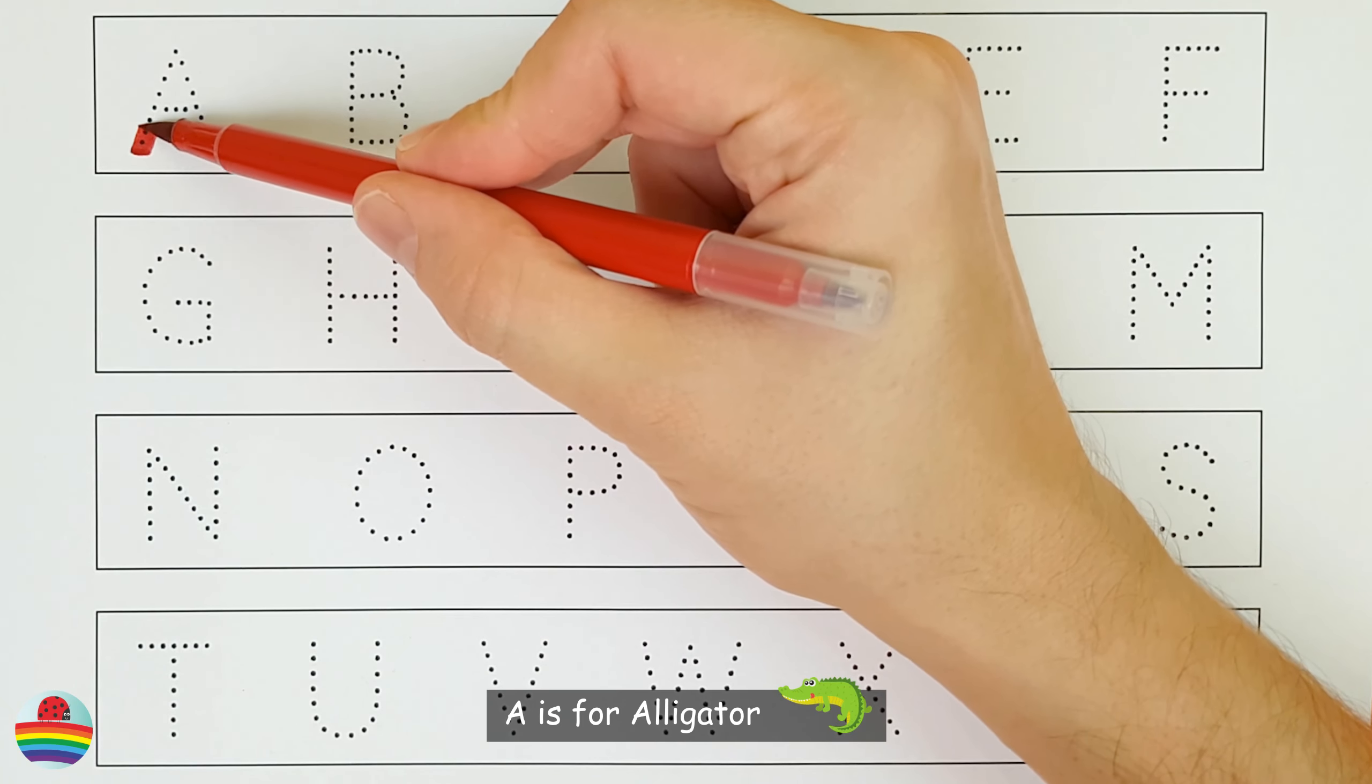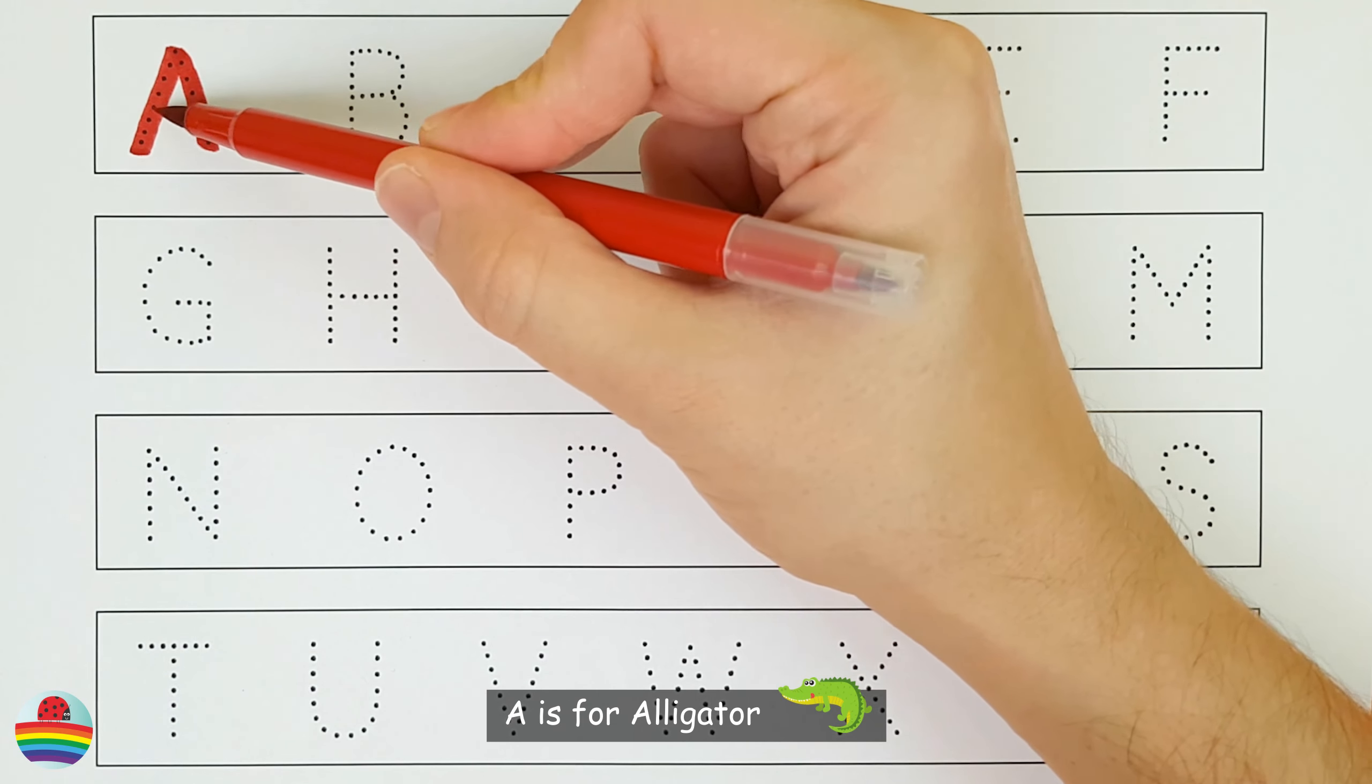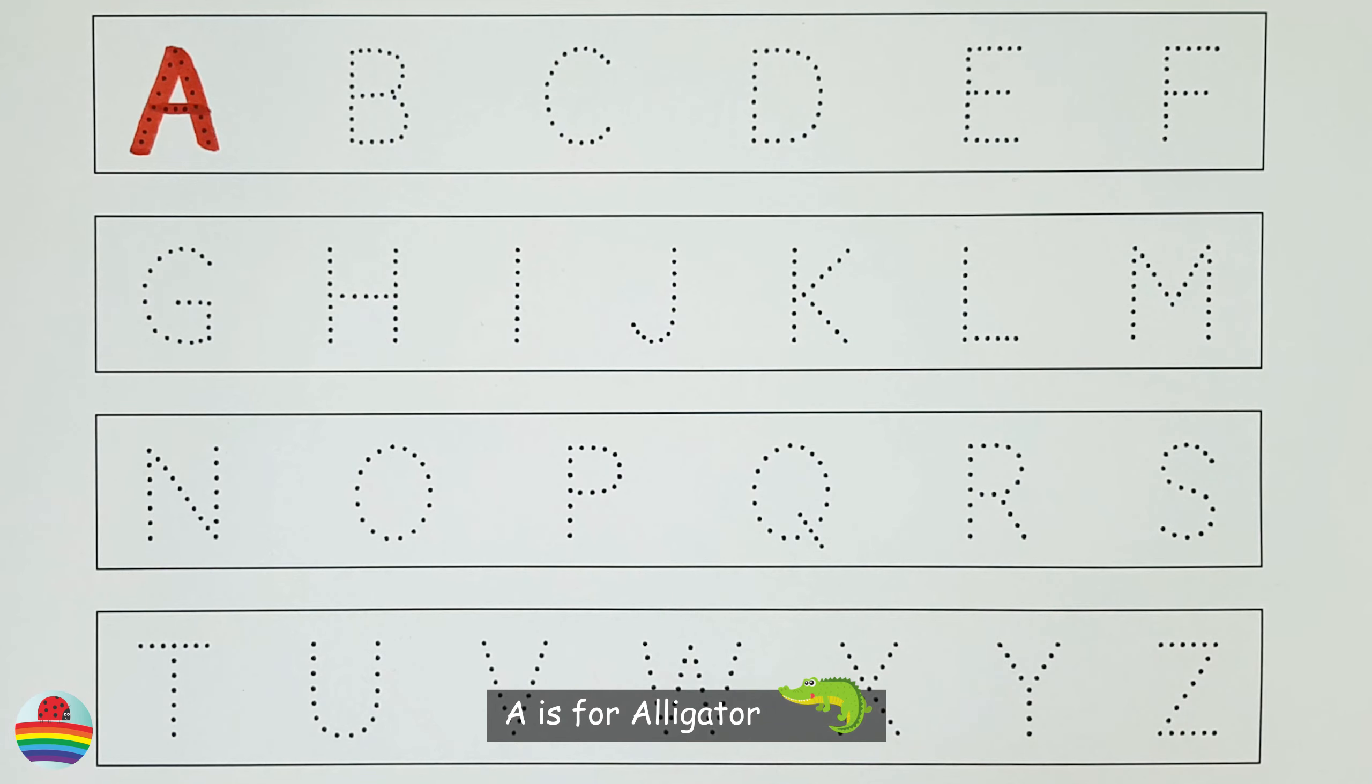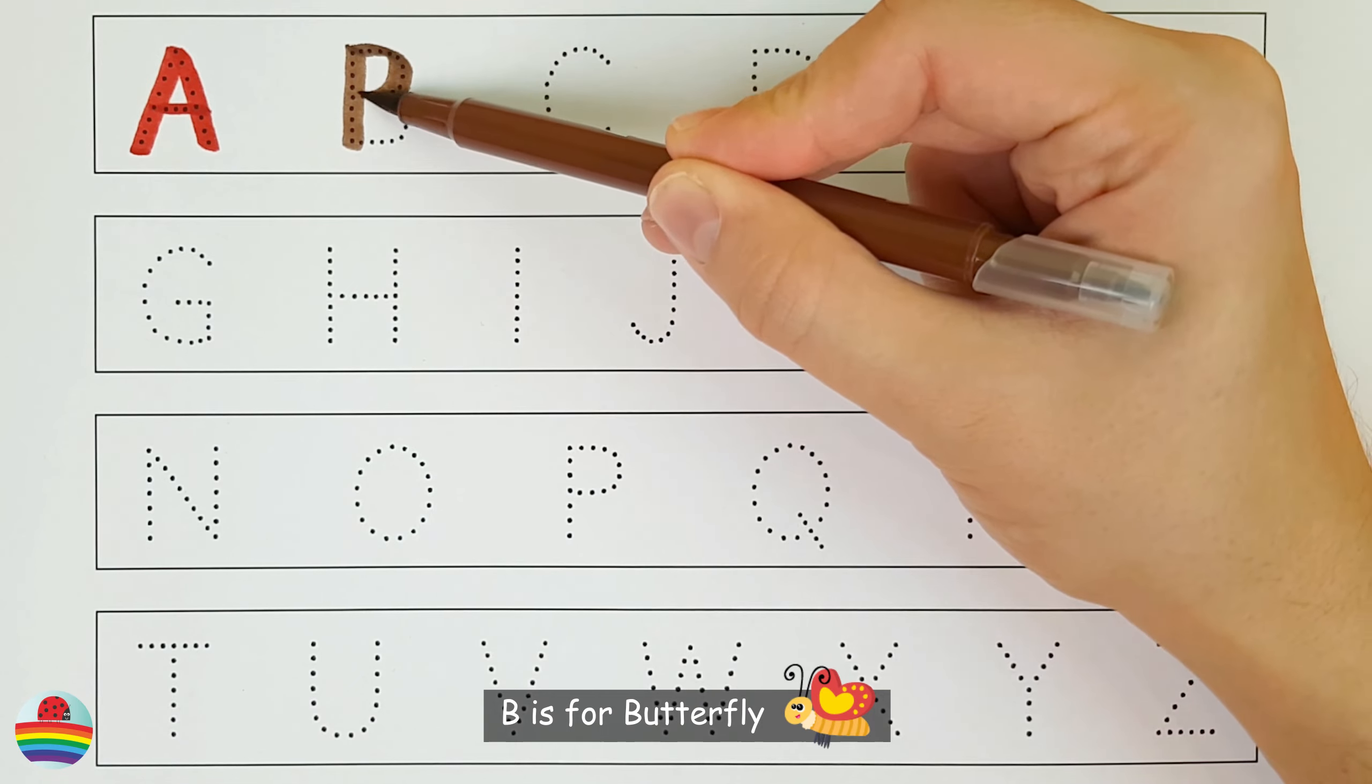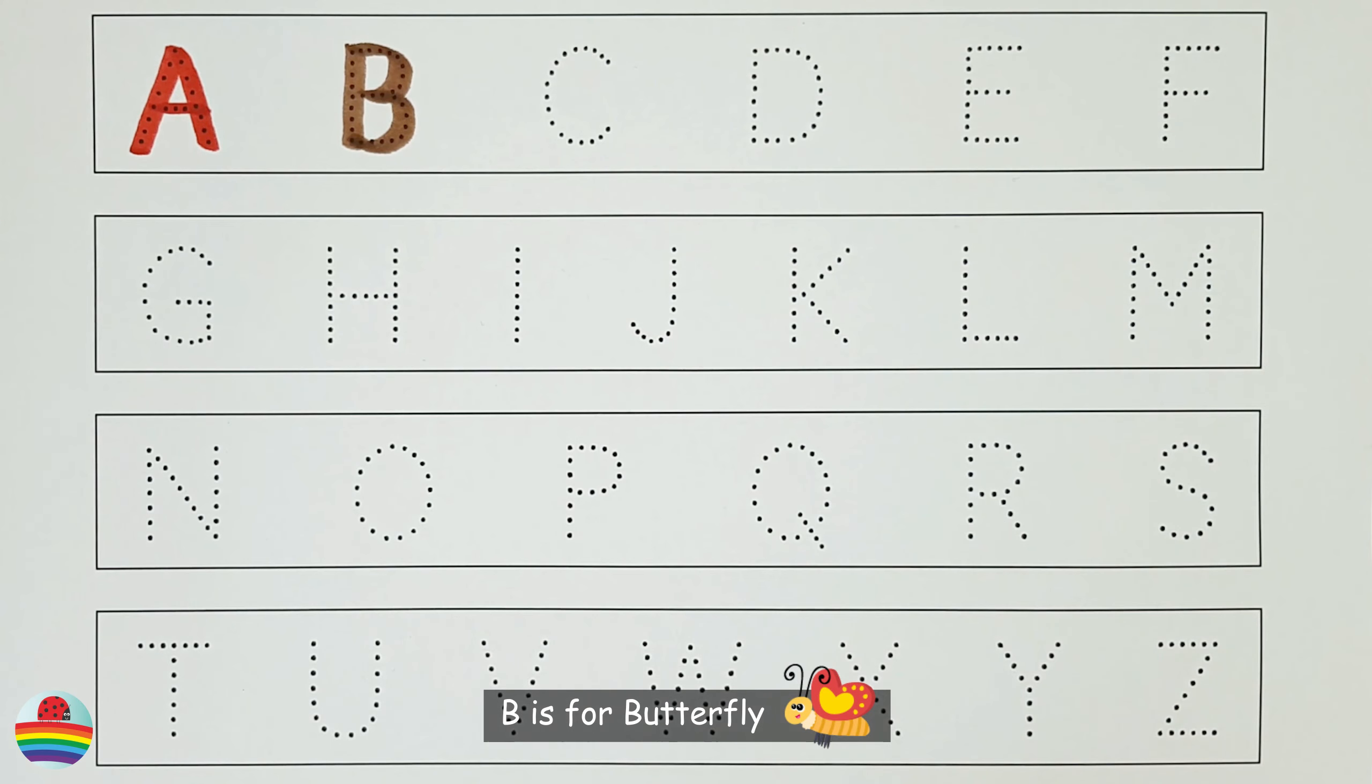A. A is for Alligator. A. B. B is for Butterfly. B.